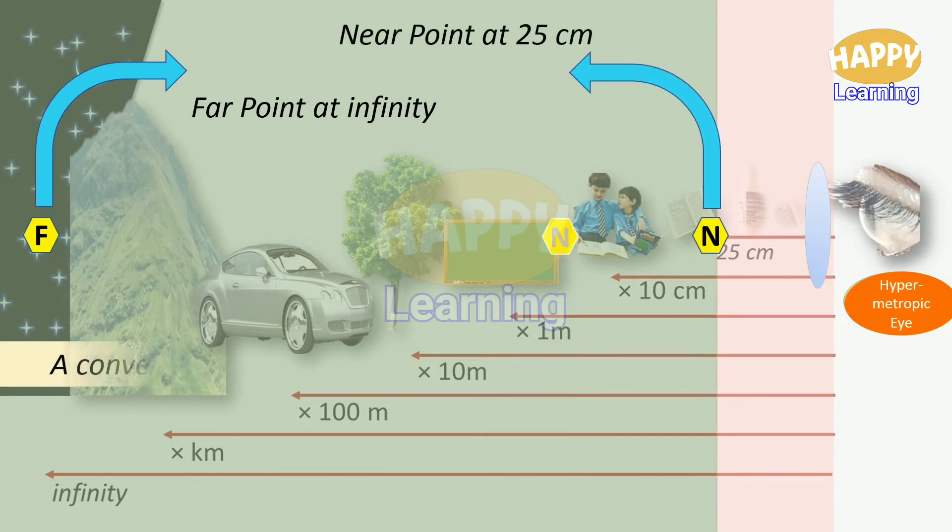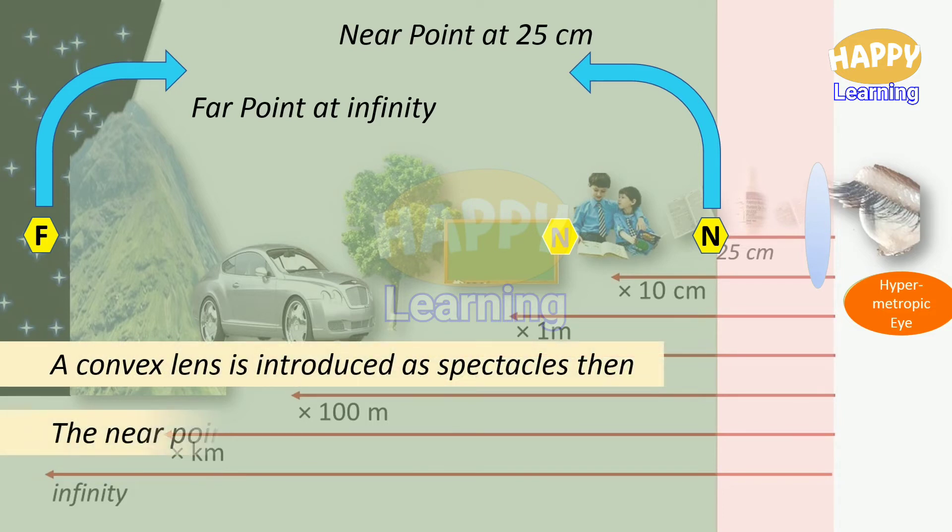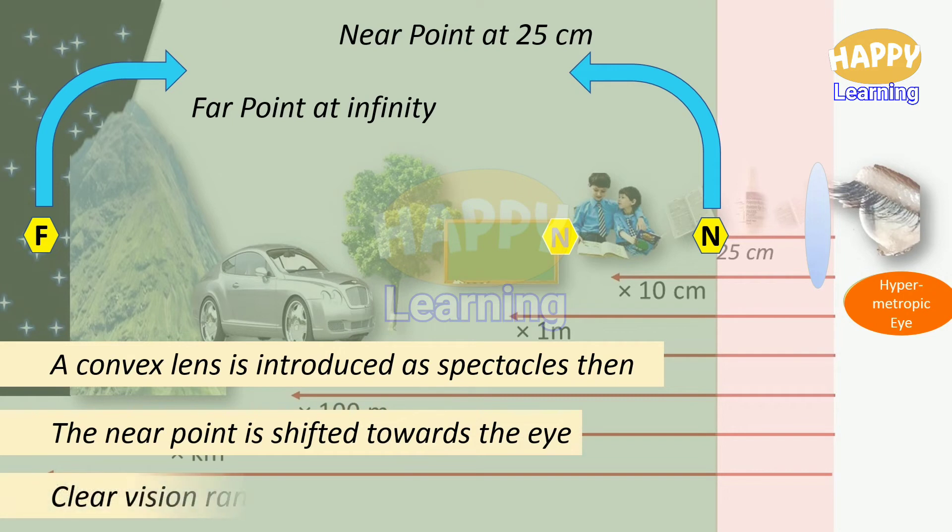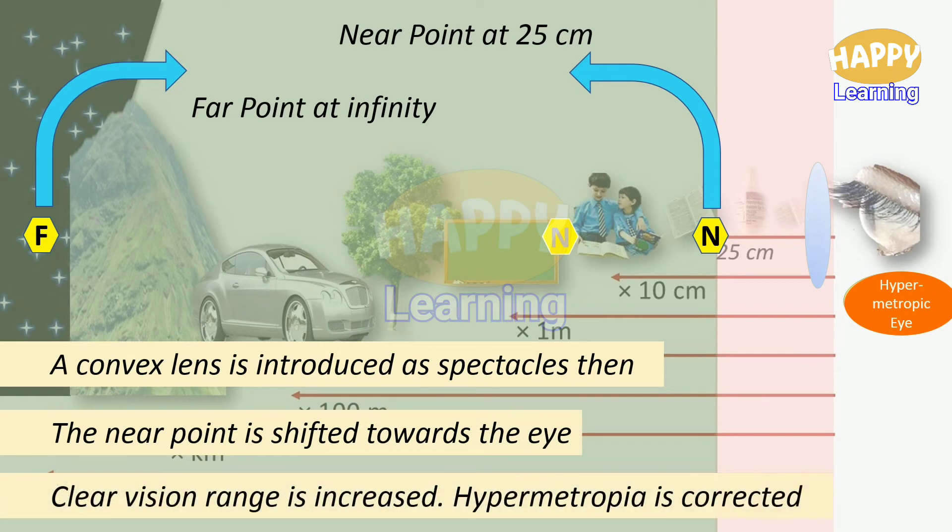A convex lens is introduced as spectacles, then the near point is shifted towards the eye. Clear vision range is increased. Hypermetropia is corrected.